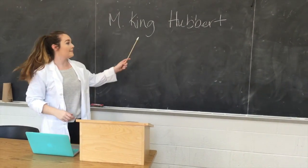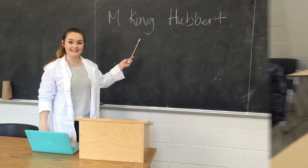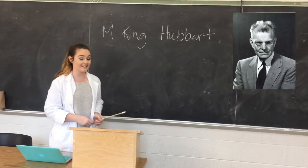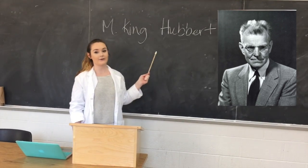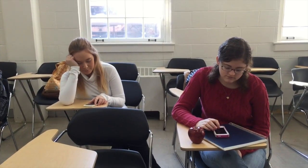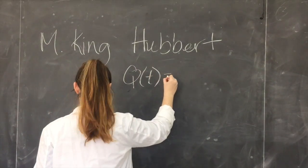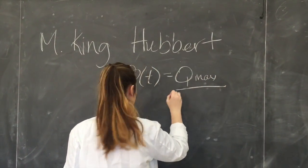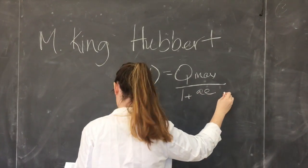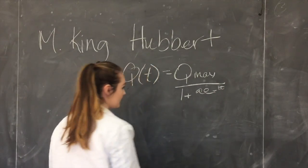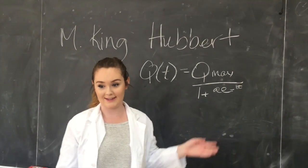So class, does anyone know who M. King Hubbert is? Hubbert theorized that the rate of petroleum tends to follow a bell-shaped curve. This is the equation for Hubbert's theory.